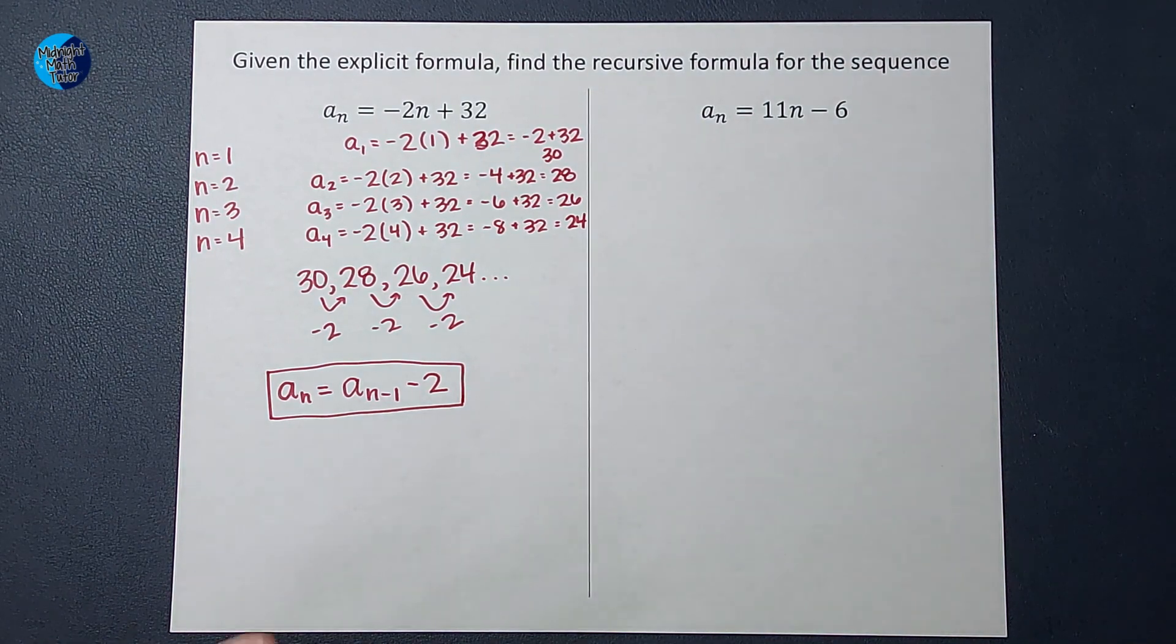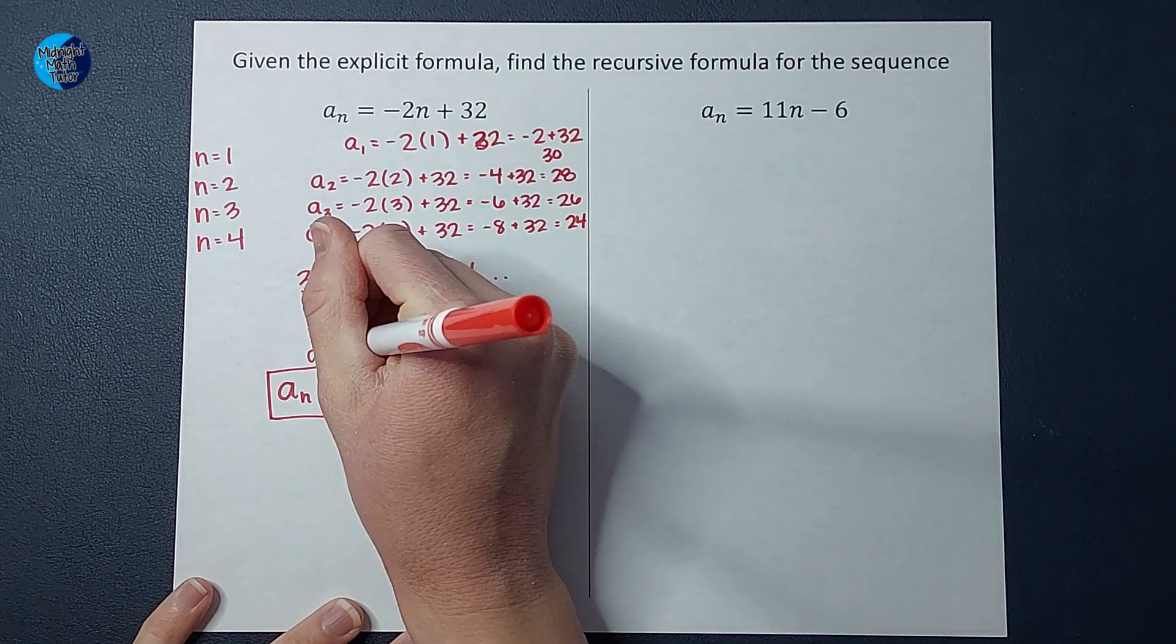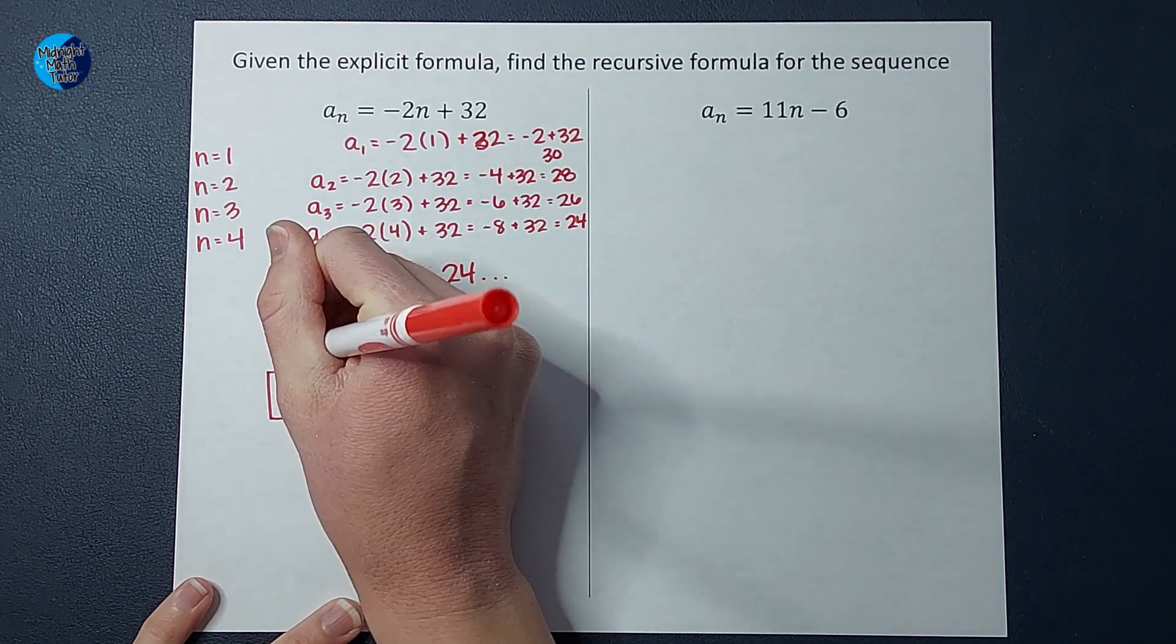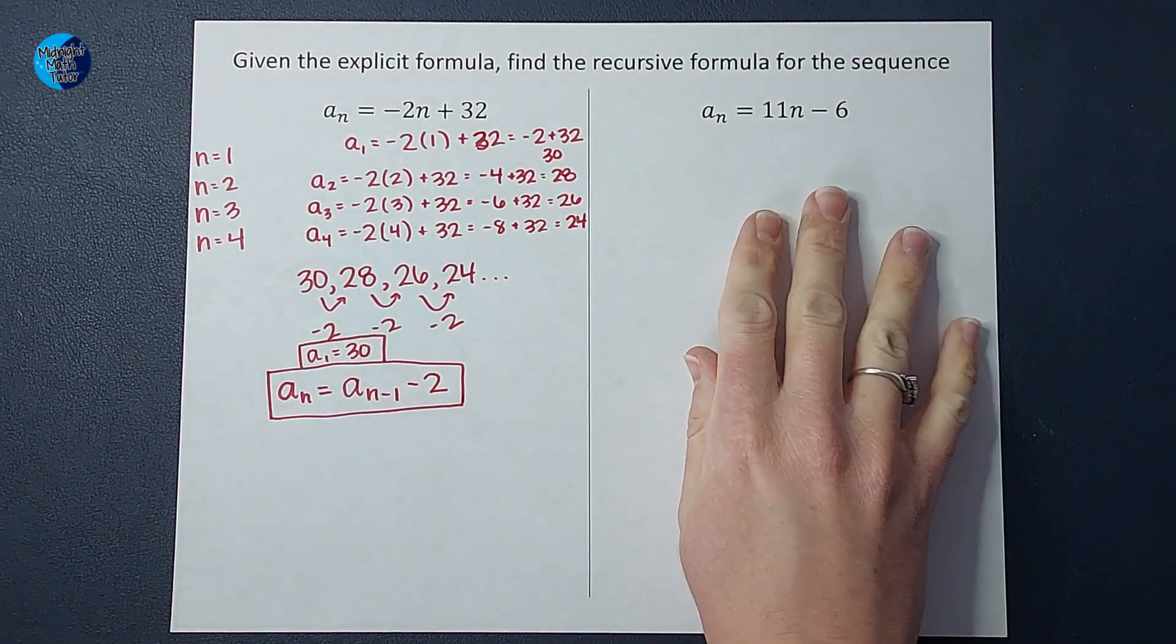That is my recursive formula. Now, in order for this to be helpful for someone, we always like to list what the first term is. A sub one is 30. There we go.